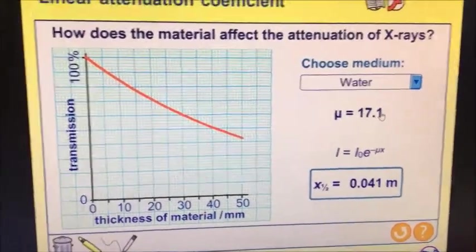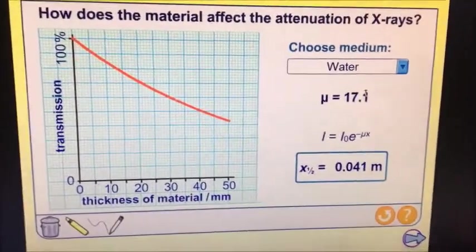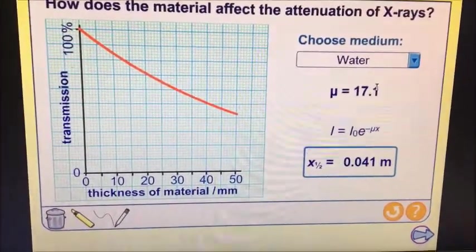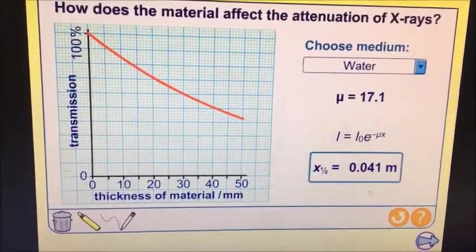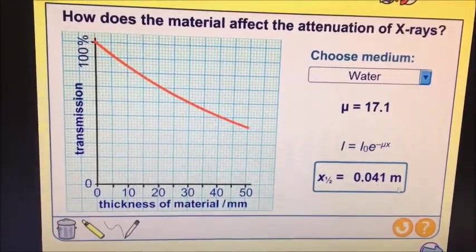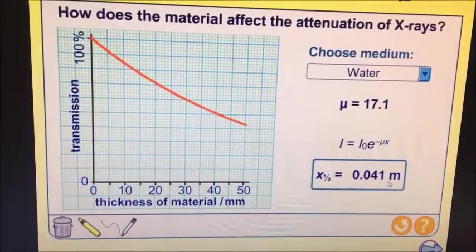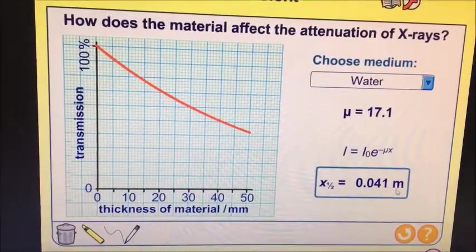So water, you can see there, has a value of 17.1. So air does attenuate, but it doesn't do very much. And then we have a half-distance there of 0.041 meters, which is 4.1 centimeters—it's gone down by half.